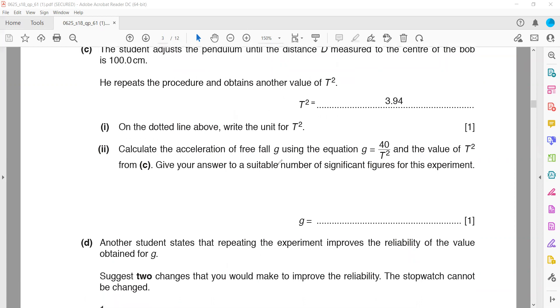First write the unit of T²: seconds squared. Then calculate: 40 divided by 3.94 equals 10.15, with units of newtons per kilogram or meters per second squared.